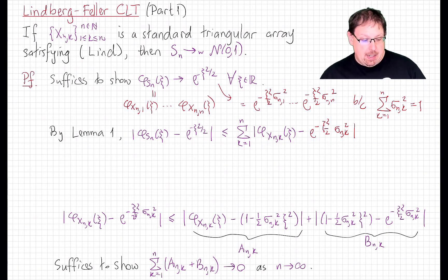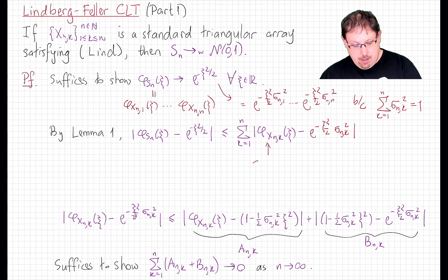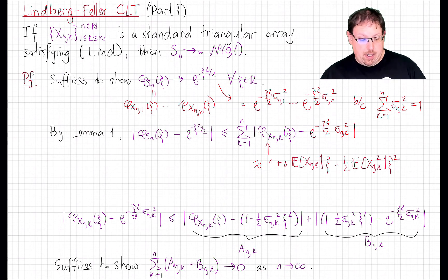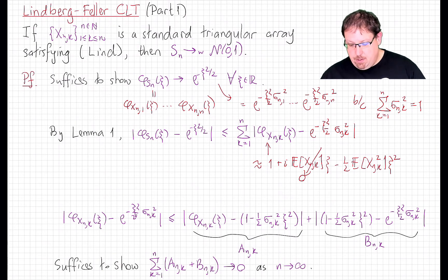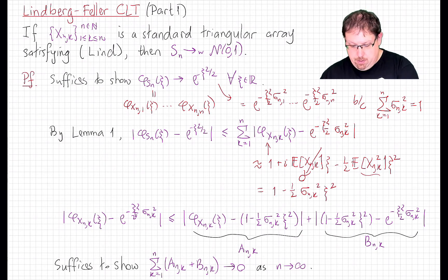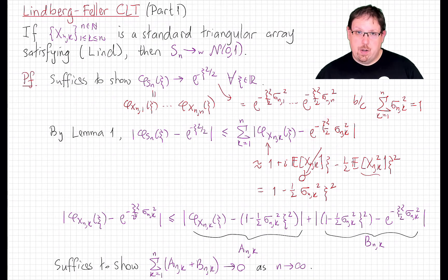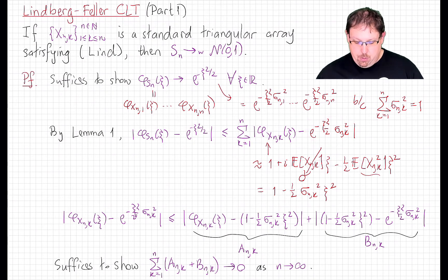Motivated by Lemma 2, let's look at the Taylor expansion of the characteristic function of x_{nk}. It's approximately equal to its second-order expansion, and the lemma tells us precisely how to estimate it. Since we've centered the random variables, the first-order term is zero and the second-order term is σ_{nk}², so we're approximating to second order the Taylor polynomial of the Gaussian characteristic function.